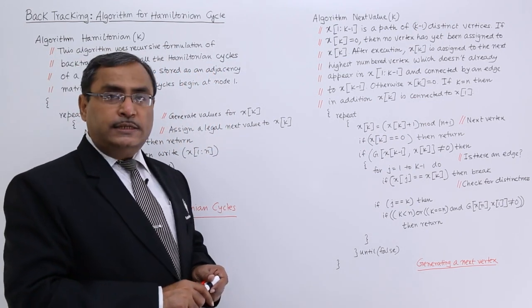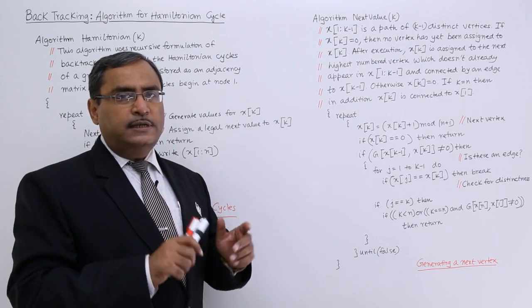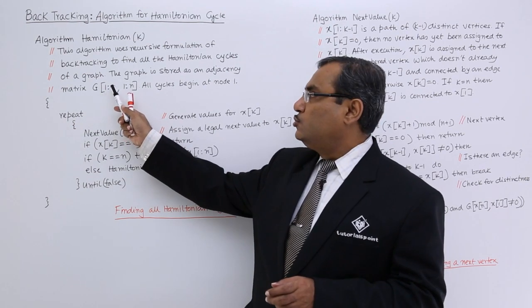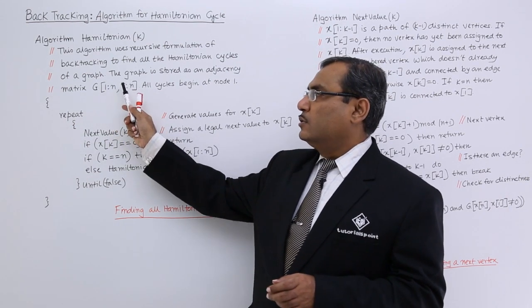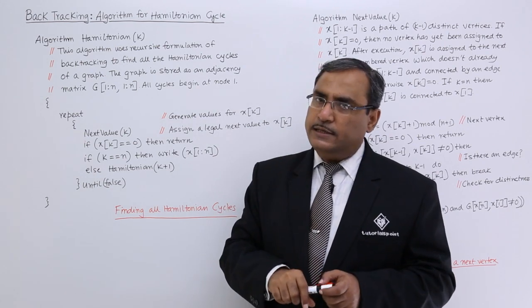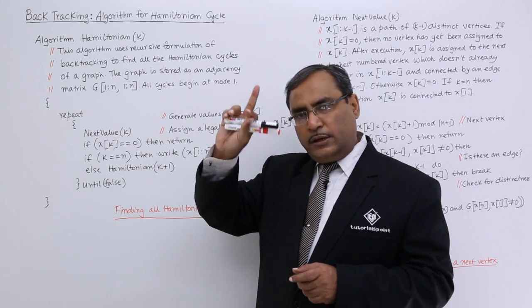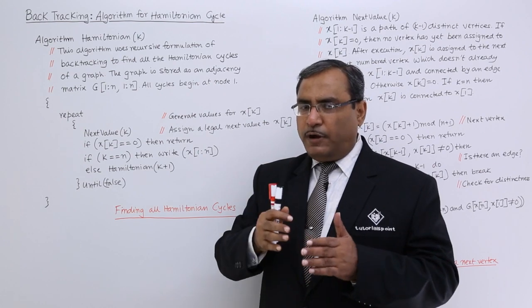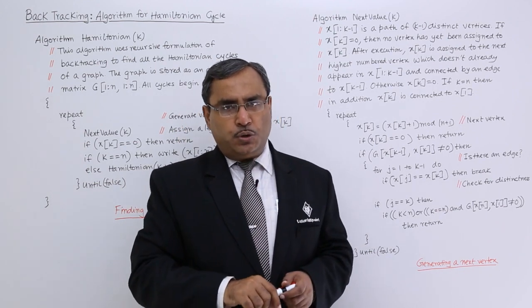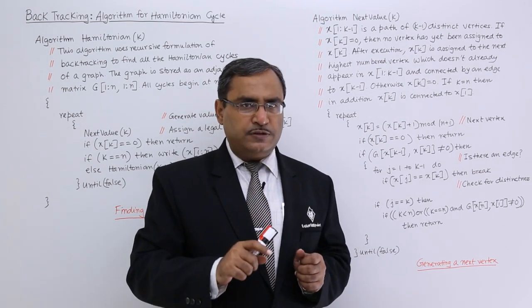Algorithm next value takes one input argument, k. A graph is given in the form of an adjacency matrix — an n×n matrix representing connectivity between nodes. Graph G is a global array, so all functions can access it without passing it as a parameter. In the previous video, we showed how to get the Hamiltonian cycle for graph G1 — please watch that for continuation. The Hamiltonian cycle consists of vertex numbers indicating the traversal order, and from the last vertex there must be an edge back to the first vertex, since we require a closed path.